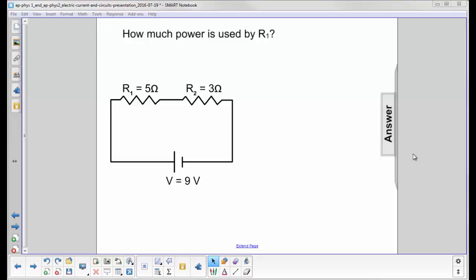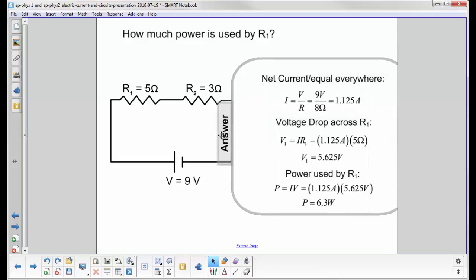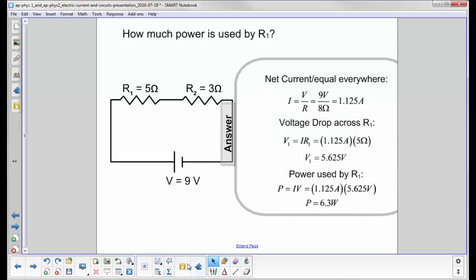How much power is used by R1? The net current everywhere in the circuit has to be constant. And in previous problems, we found out that the current was the voltage over the equivalent resistance.